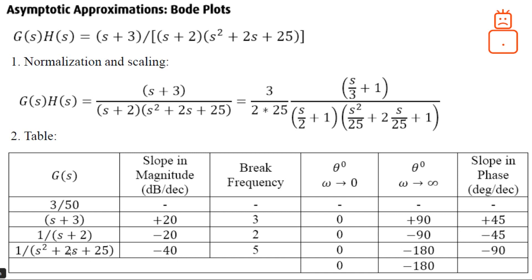For the complex poles, it is better to deal with both as a single polynomial. We have two poles, each contributing minus 20, so in total the slope is minus 40 dB per decade. Both have a break frequency at five. Each goes from zero to minus 90 degrees, so together they go from zero to minus 180 degrees, with a combined slope of minus 90 degrees per decade. Summing all contributions, the phase starts at zero and ends at minus 180 degrees.